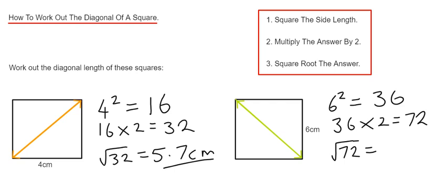Again, we just need our calculator for that. So the square root of 72 is 8.5 centimeters to one decimal place. Thanks for watching guys, see you next time!